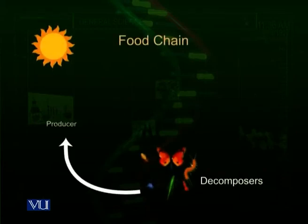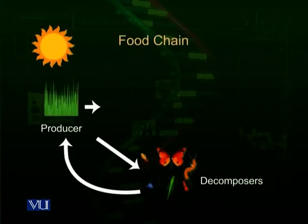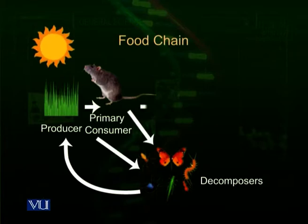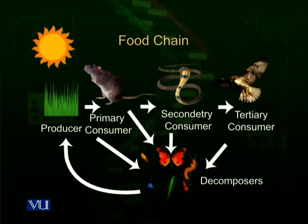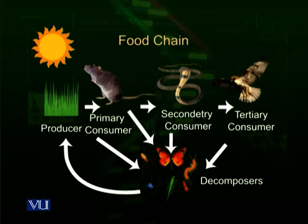Let us have a look at a grassland food chain. The diagram shows that the source of energy is sunlight, which comes through producers inside the ecosystem. There are plants which get energy from the sunlight and convert this energy into ATP, the chemical form of energy, and into carbohydrates to make their body and life processes possible.